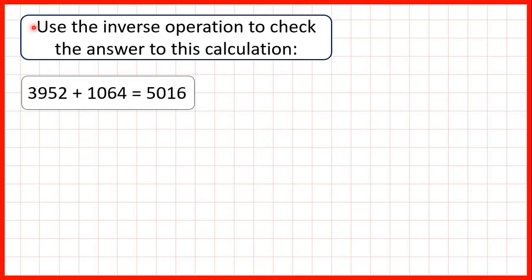Use the inverse operation to check the answer to this calculation. We have 3952 plus 1064 equals 5016.